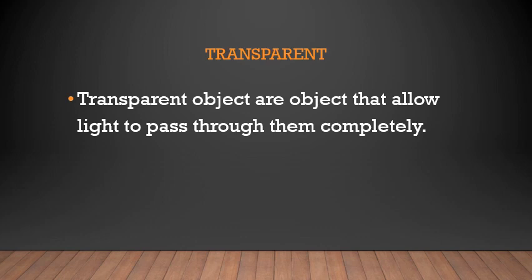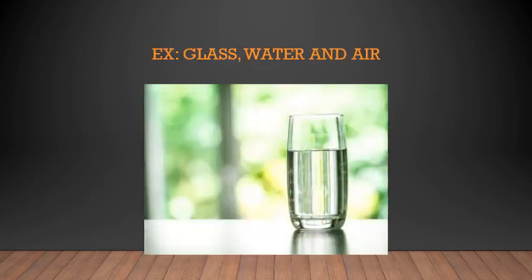Transparent objects are objects that allow light to completely pass through them. If you are standing on the other side of the glass, you can see what is there on the other side. Examples are glass, water, and air. The cleaner the air or water, the more transparent they are. Water is odorless, tasteless, and colorless — you can see clearly through it. Glass, water, and air are the best examples of transparent objects. Such objects are called transparent objects.